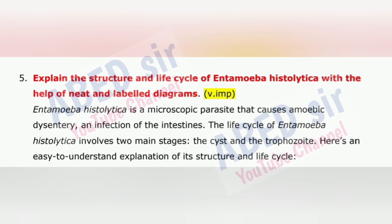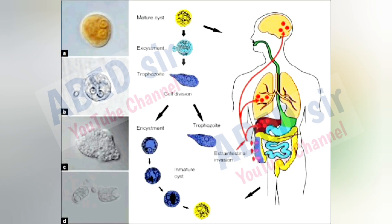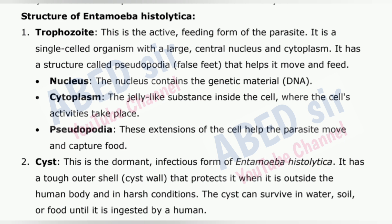Next important question is 5: Explain the structure and life cycle of Entamoeba histolytica with the help of neat and labelled diagrams. Entamoeba histolytica is a microscopic parasite that causes amoebic dysentery and infection of the intestines. The life cycle of Entamoeba histolytica involves two main stages: the cyst and the trophozoite. Here's an explanation of its structure and life cycle.